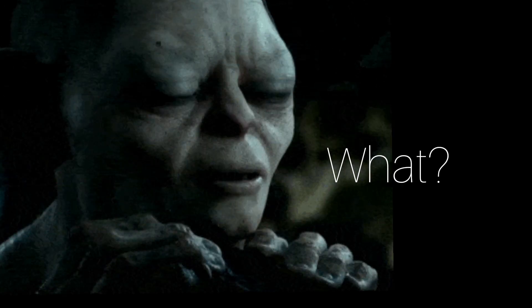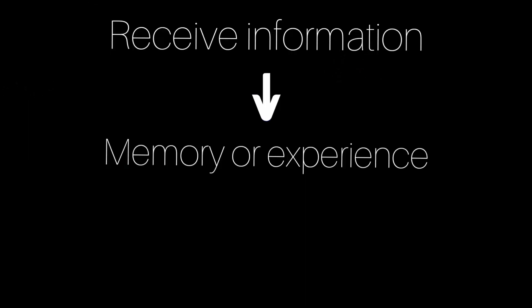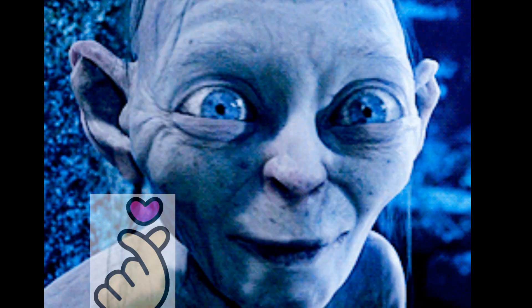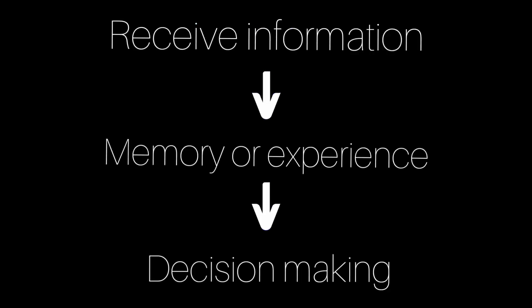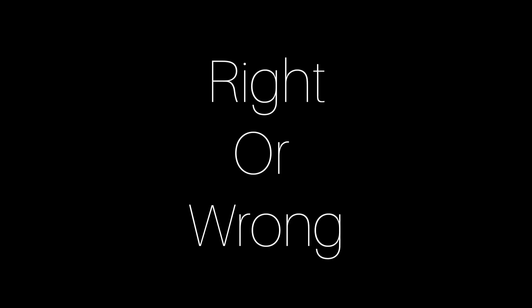I found that there are two phases of the thought process. Phase one is when people receive the information. The process starts when the information is received from a source through a medium. Then people filter the information using cognitive resources — such as memory or experience — and use different decision making techniques to decide whether the information is right or wrong.